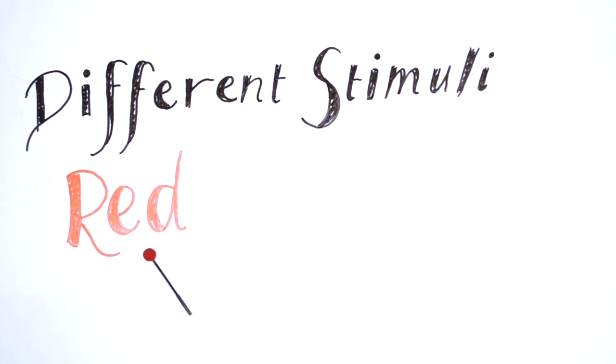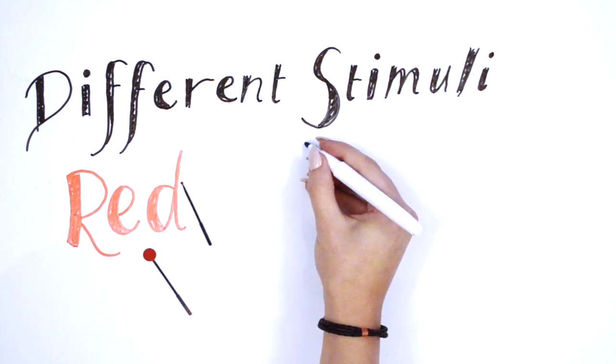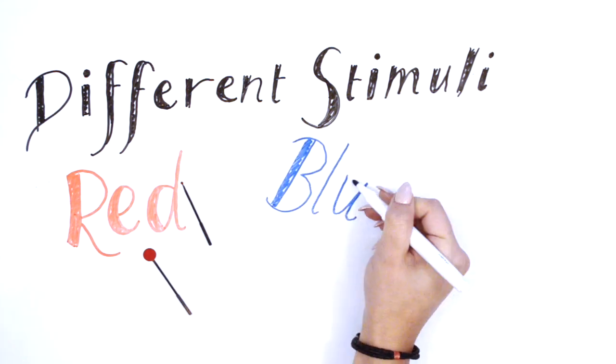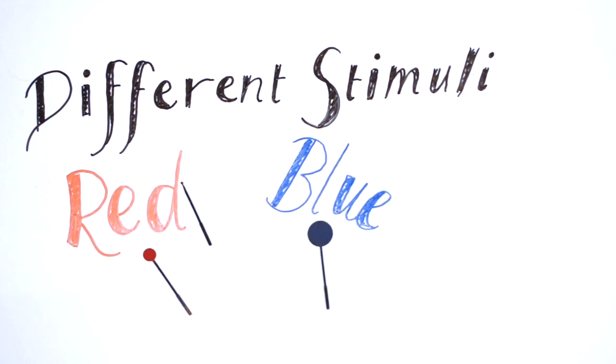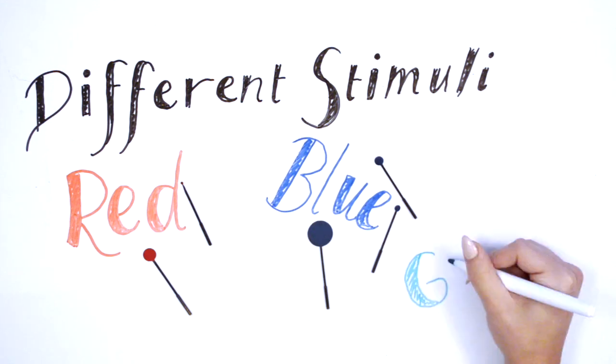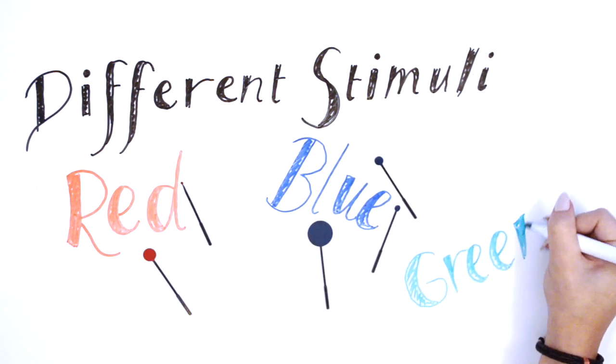Typically, a red stimulus is utilized for neurological problems such as compression to the visual pathway and also used for testing of the macula. We can also utilize a blue stimulus which is typically used for diabetic retinopathy and glaucoma. Finally, a green stimulus can also be used for macular degeneration.